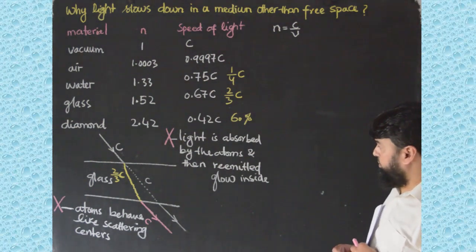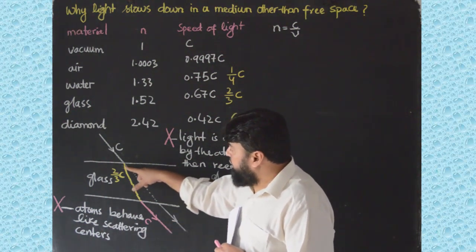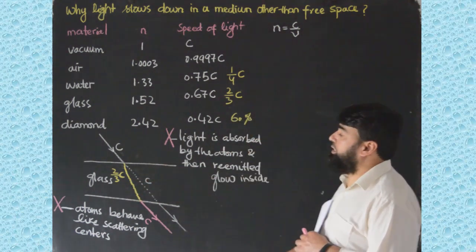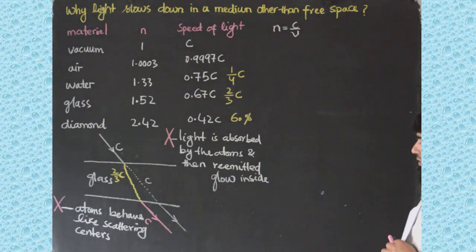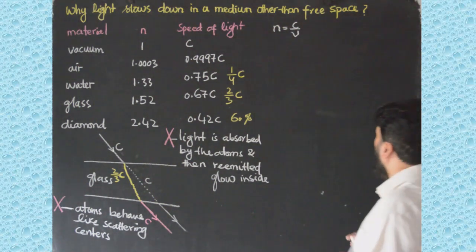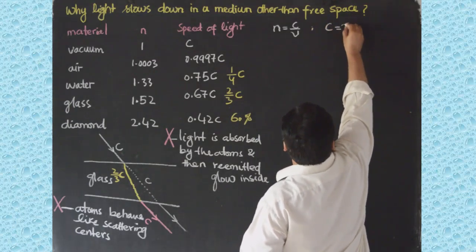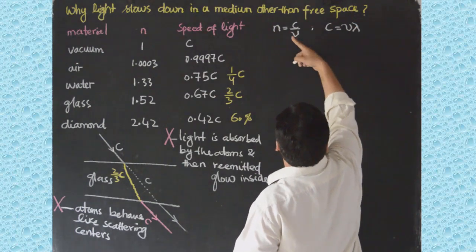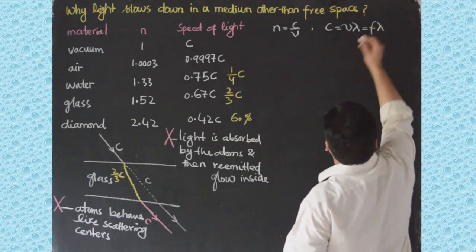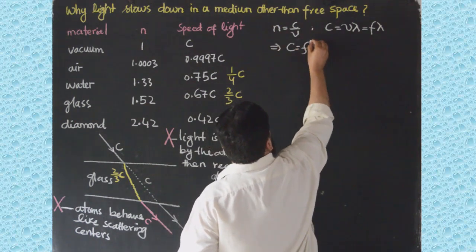So what is the correct explanation? It must also explain why the wavelength of light changes while the frequency remains the same inside the medium. We start with the equation: c equals f times lambda, where c is the speed of light in vacuum.